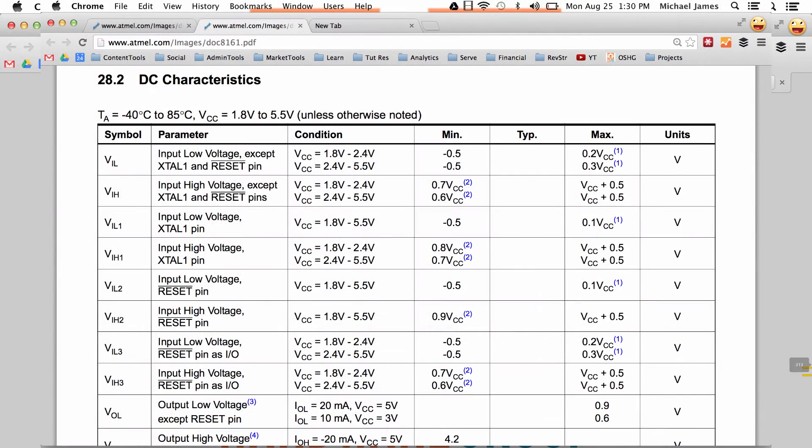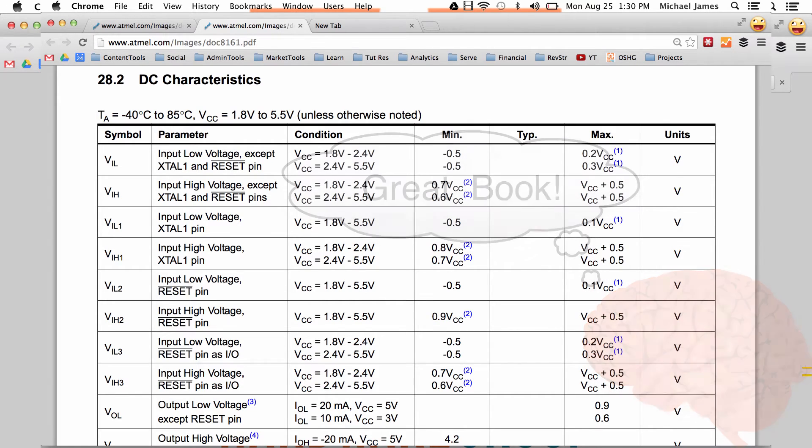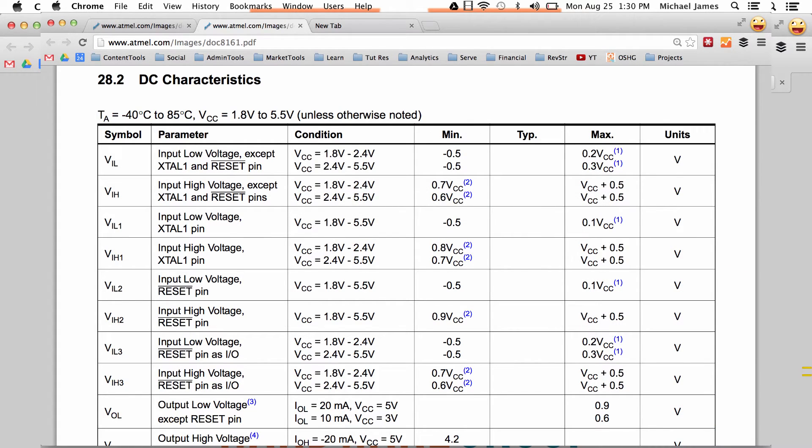Here we are looking at the data sheet for the Atmel 328 microcontroller. Sometimes data sheets can be really intimidating, and there's no question this is a huge data sheet with like 500 something pages. Don't worry though, if you're just looking at specific data it can be helpful. What we're seeking here is to find out what is going to be considered a low voltage, and we can find it in the DC characteristics table.